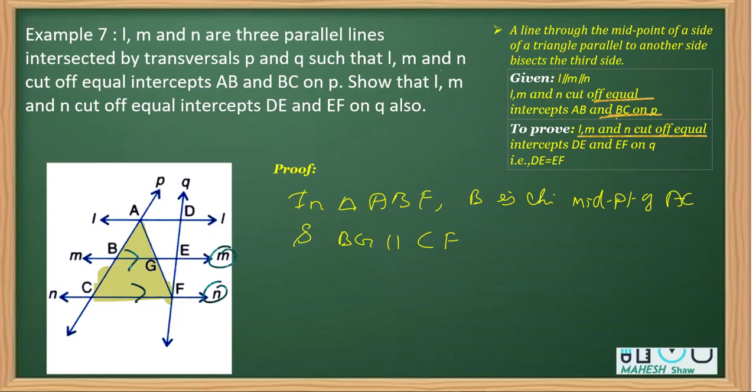So we can say, therefore, by applying this converse of midpoint, by applying this property called converse of midpoint, we can say that G is the midpoint of AF. That's what the property says: line drawn through the midpoint of one side parallel to the other side bisects the third side.